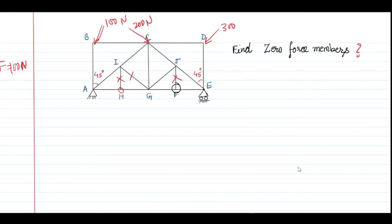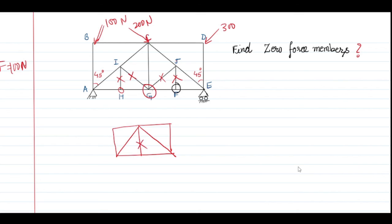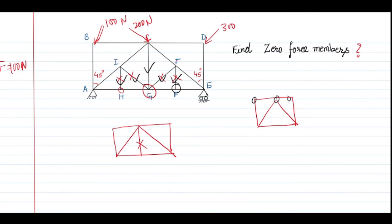Once HI is removed, IG becomes a side branch. Similarly JG becomes a side branch. When these are removed, looking at the G joint, GC is also zero force and is removed. Ultimately we are left with a triangle with the applied forces. In total, five members are zero force members in this truss.